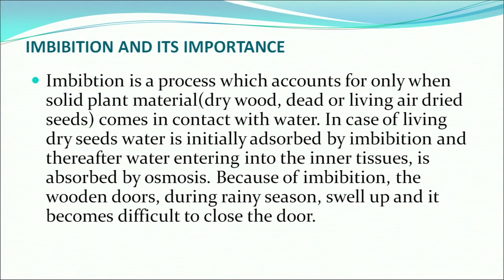How does imbibition take place and what is its importance? Imbibition is a process which occurs when solid plant material like dry wood, dead or living air-dried seeds comes in contact with water. In the case of living dry seeds, water is initially absorbed by imbibition and thereafter water entering into the inner tissue is absorbed by osmosis. Because of imbibition, wooden doors during the rainy season swell up and it becomes difficult to close them.